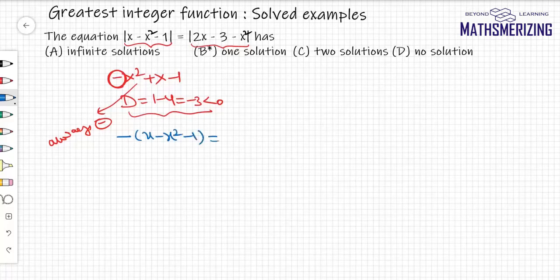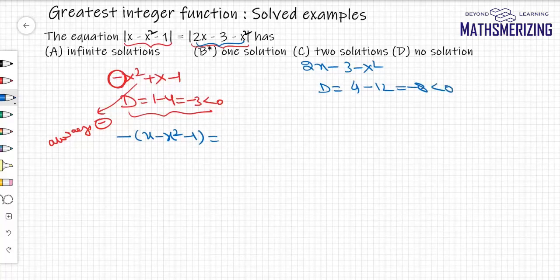Now what about the other expression? For this one also, this is 2x minus 3 minus x squared. The value of d here is 4 minus 12 which is minus 8, which again is less than 0. So again d less than 0 and a less than 0. So it clearly means this is always negative.